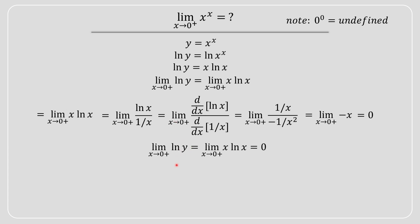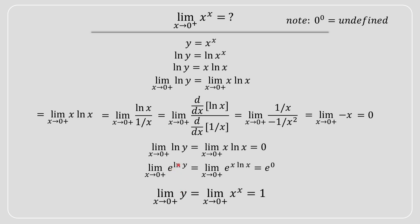Therefore we apply Euler's number e to each side of the equation. On the left-hand side, e to the power of ln(y) cancels the logarithm leaving y. On the right-hand side, e to the power of x·ln(x) can be rewritten as x to the power of x — since e and ln cancel — and e to the power of 0 equals 1.